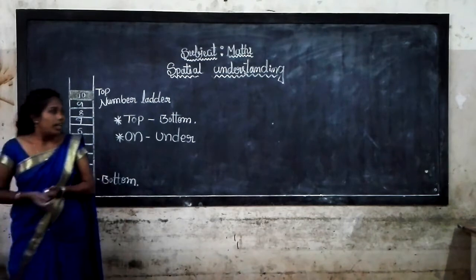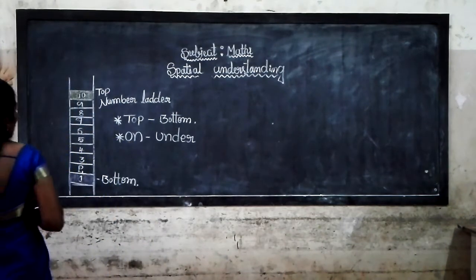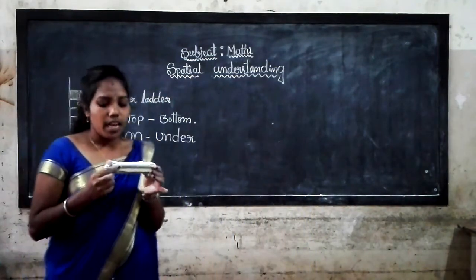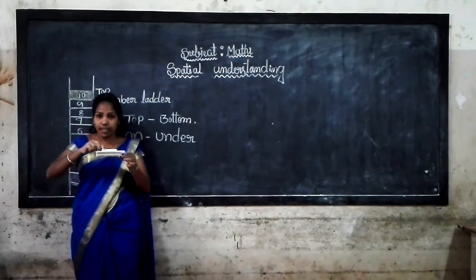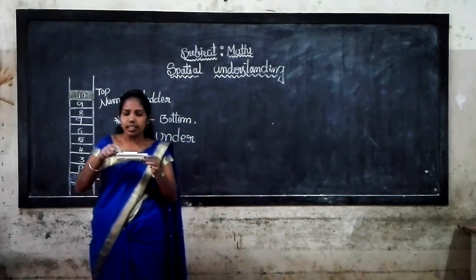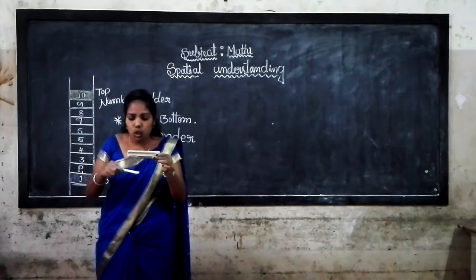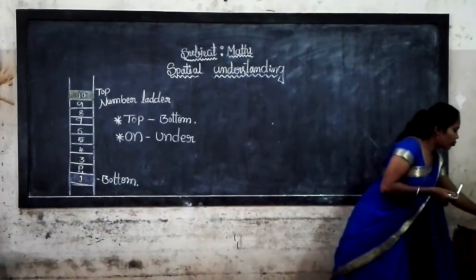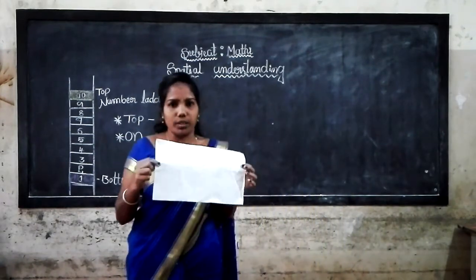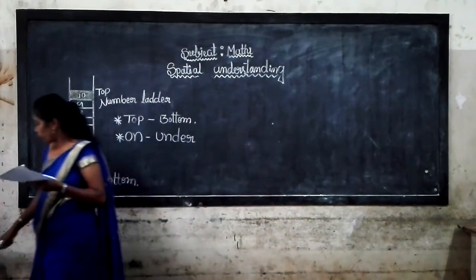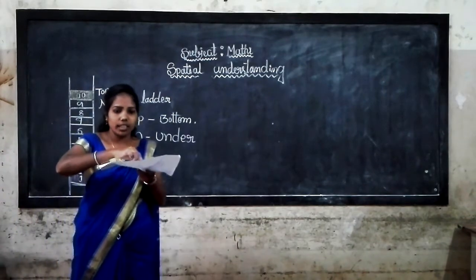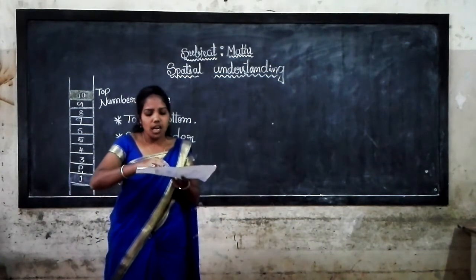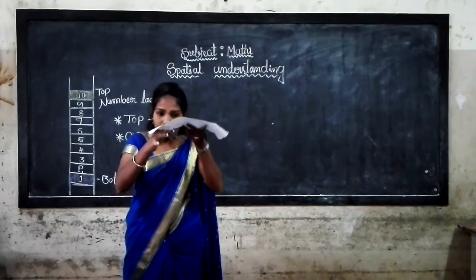Let's see more examples of the concept of on and under. This is water — put the chalk piece on the dust. Now where is the chalk piece? The position of the chalk piece is under the dust. This is paper — I'm putting a pen on the paper. The position of the pen is on the paper. Now the position of the pen is under the paper.